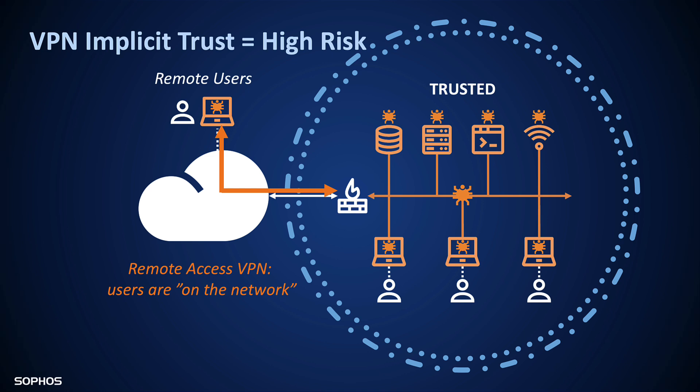How is Zero Trust used to improve remote access to network resources? With old school remote access VPN, you connect to the network, and as we discussed, once you're on the network you have all that implicit trust that comes with it, with potential access to other systems. Device health is not considered at all when using VPN — if you have a device that's been hacked or attacked, VPN will not prevent you from connecting. The implicit trust that VPN provides means attackers on compromised devices have broad access to other parts of the network, making it an ideal target for a ransomware attack.